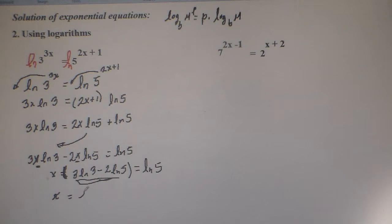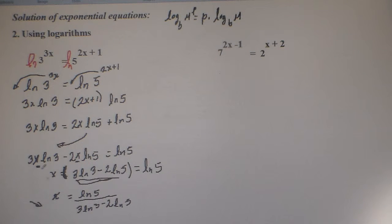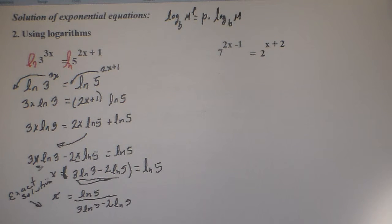We get x equals ln of 5 over 3 ln of 3 minus 2 ln of 5. The solution we get here is the exact solution. If you want to get the approximate solution, what you have to do is evaluate this expression with your calculator.